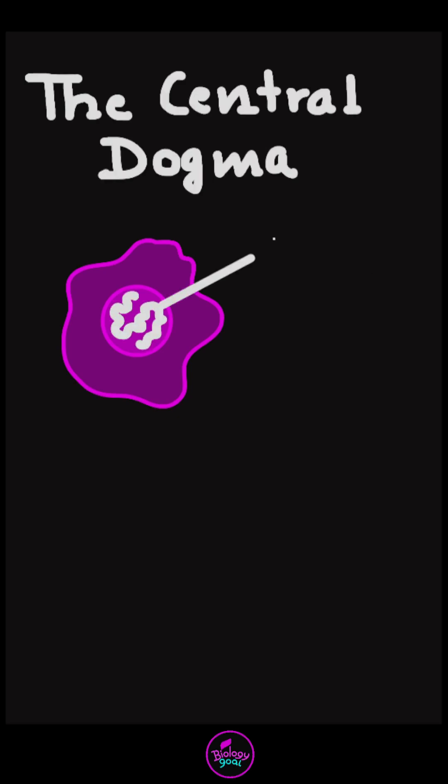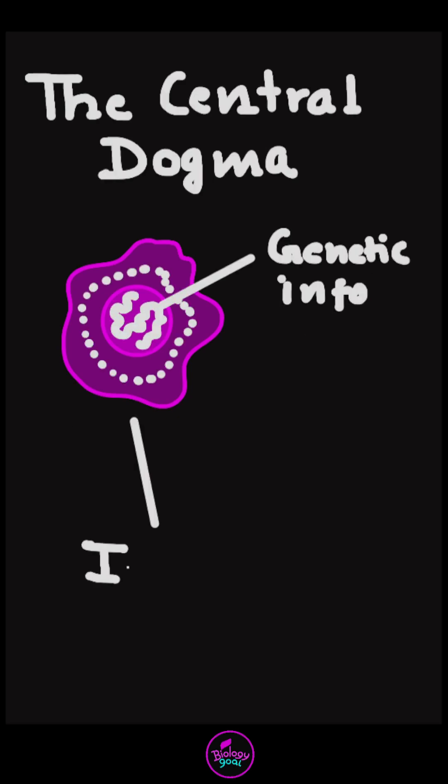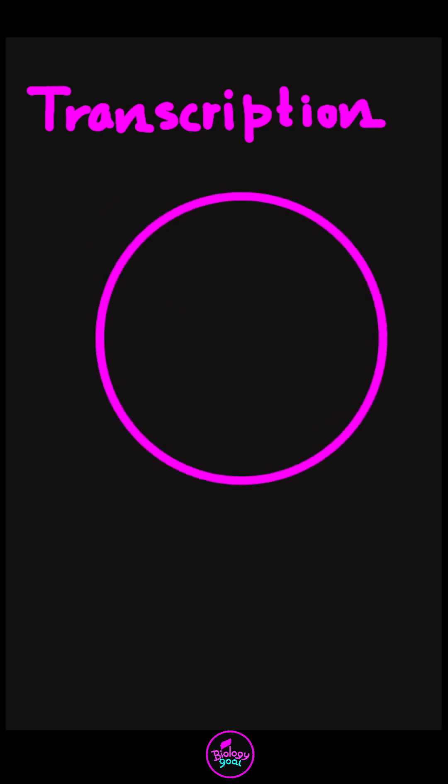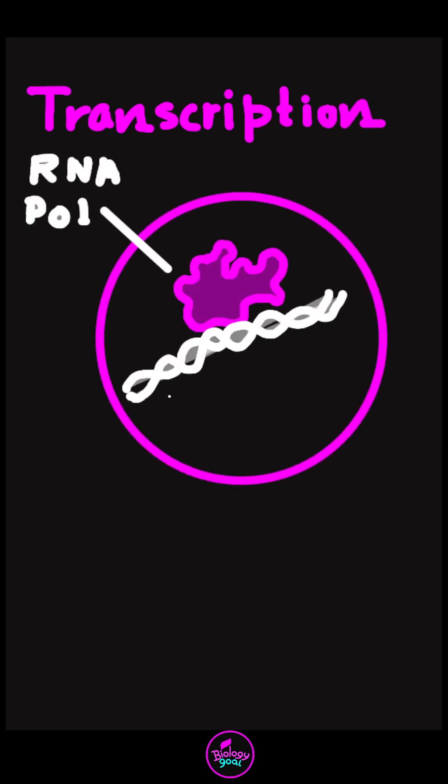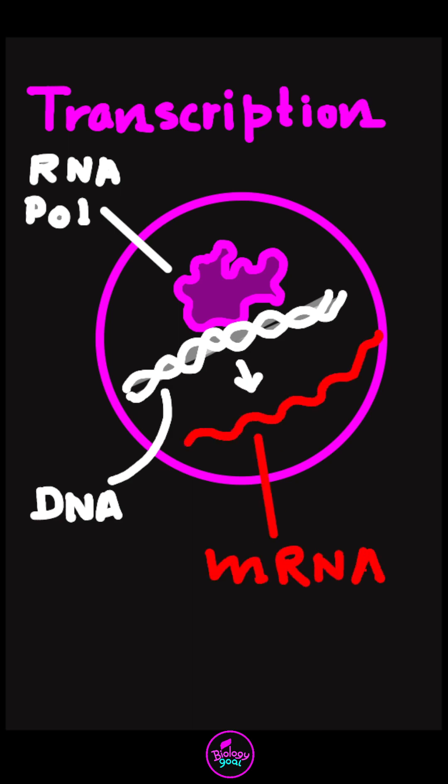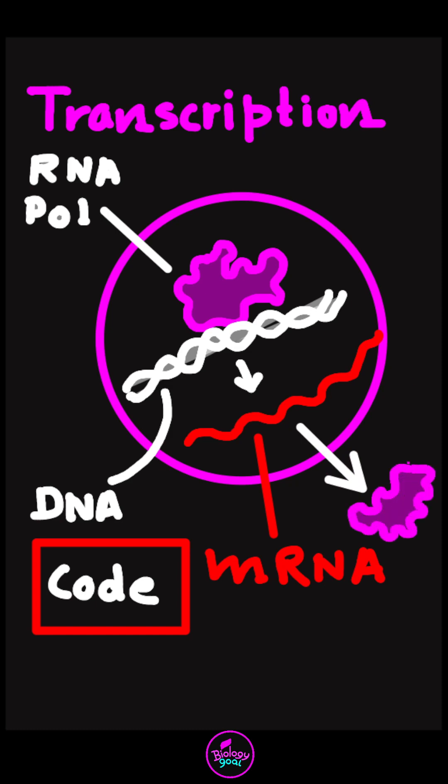The central dogma explains how genetic information flows inside the cell. It begins with transcription. Inside the nucleus, RNA polymerase binds to the DNA and synthesizes a complementary mRNA strand. This mRNA carries the coded instructions required for protein synthesis.